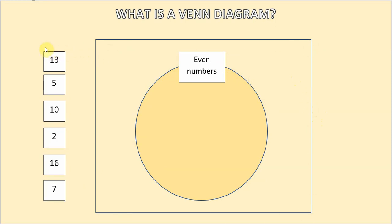So let's sort this set of numbers first, our first number to sort is number 13. 13 is not an even number so it goes inside the universal set but not inside the even number set. 5 again is an odd number so it doesn't belong in the even number set so it goes in the universal set outside the even number set.